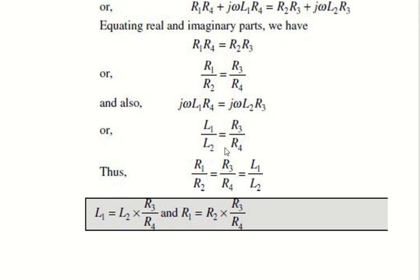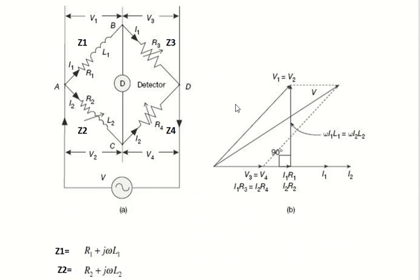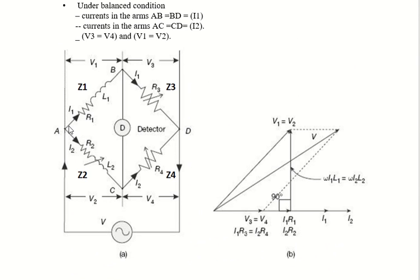Equating the imaginary parts: jωL1·R4 = jωL2·R3, so L1·R4 = L2·R3, giving L1 = L2·R3 / R4. This is the unknown inductance L1. Note that R3/R4 = R1/R2, so L1/L2 = R1/R2. To summarize: Z1 contains R1 and L1, Z2 contains R2 and L2, while Z3 and Z4 contain only resistance. Two branches have inductance and resistance; two branches have only resistance.